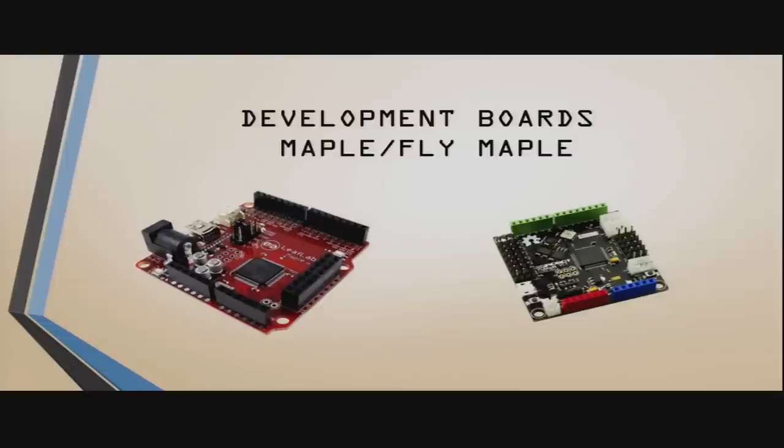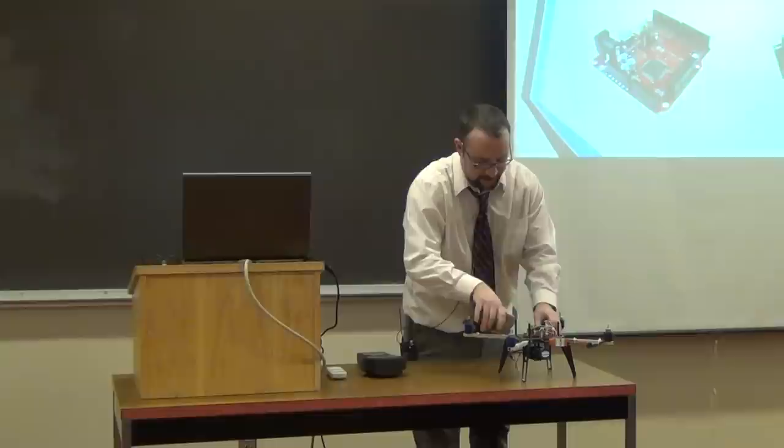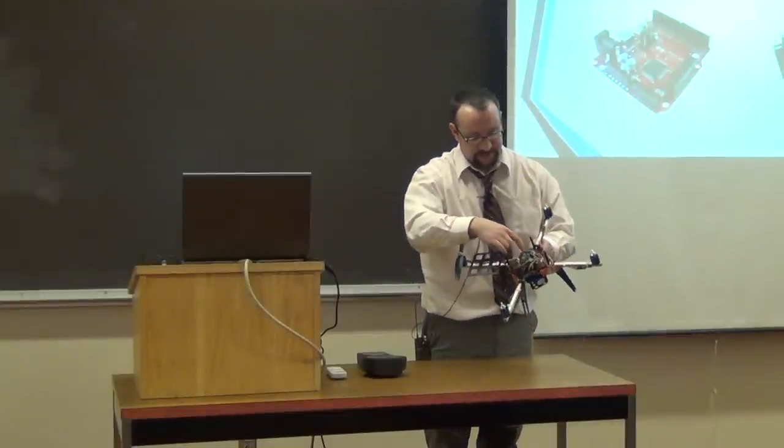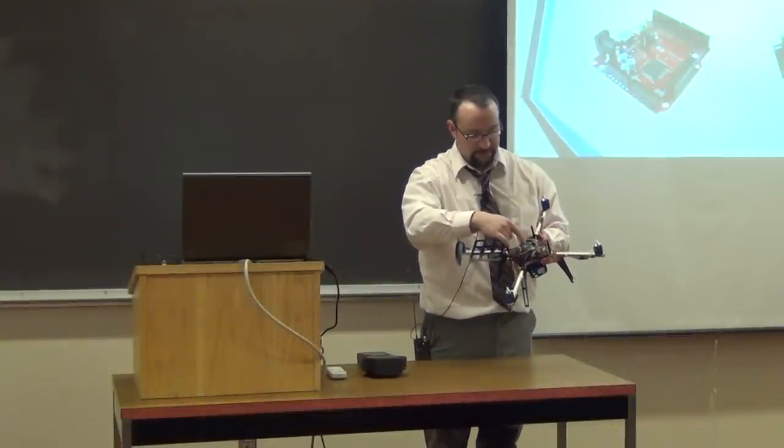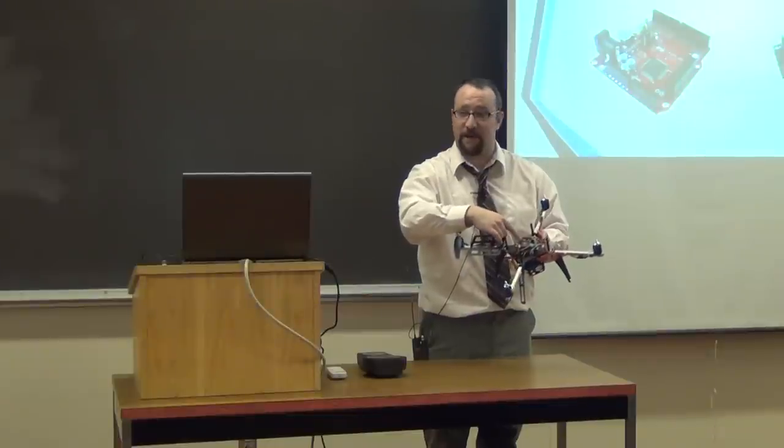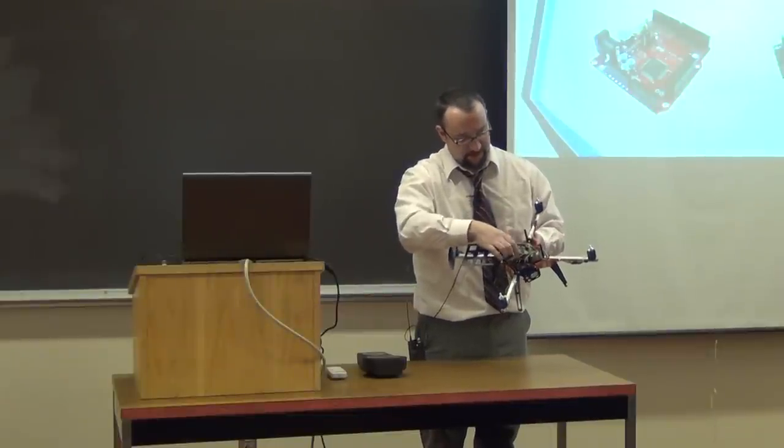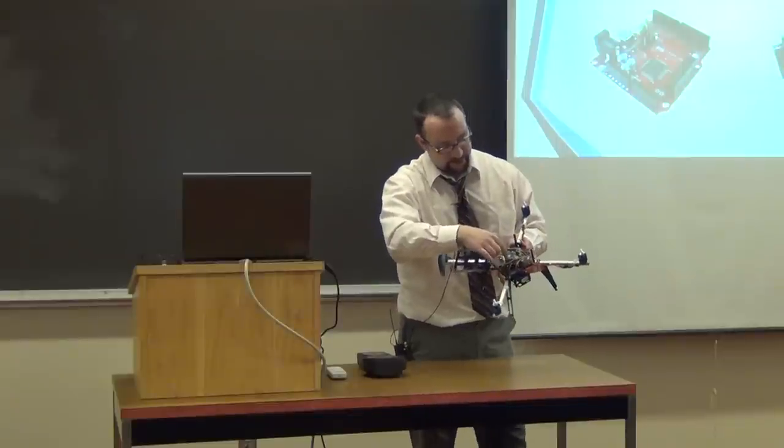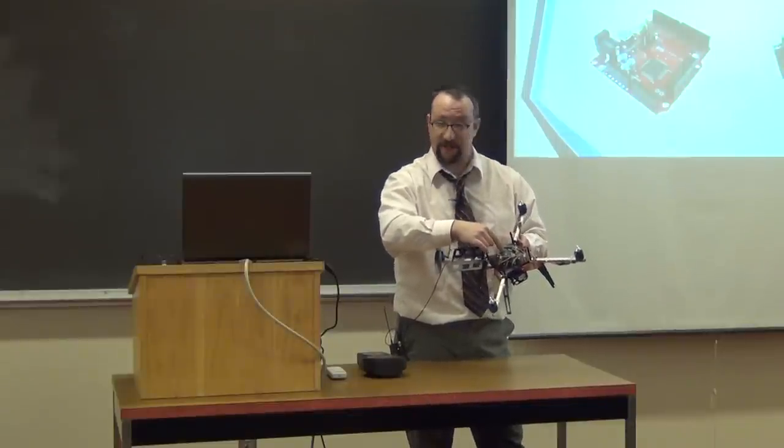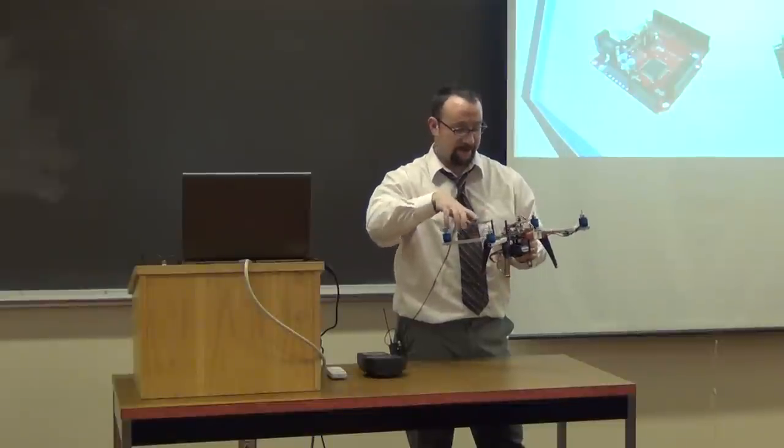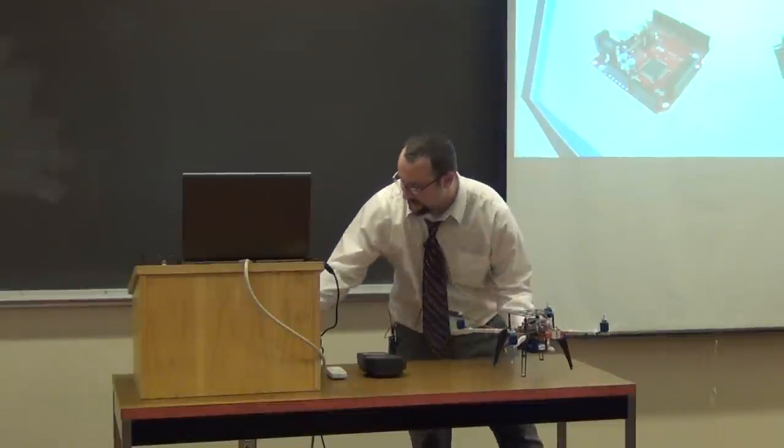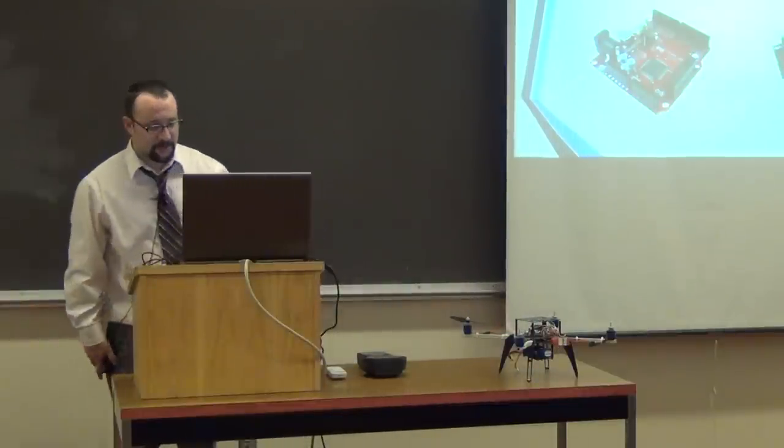And then there's the Fly Maple. So I talked about the Arduino, which is used in AVR chip. It's an 8-bit chip. I don't have a Maple, but I have a Fly Maple. And the Fly Maple is an ARM chip, a very powerful ARM chip, that I can write C code. Basically C code. C code that runs on this and it's a very powerful ARM chip. So it's like the Arduino, but much more powerful. Faster and more memory to work with.